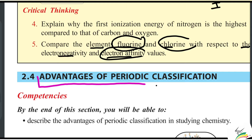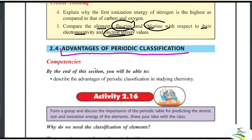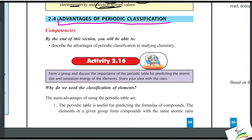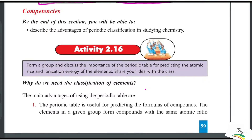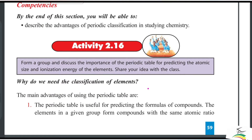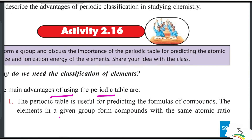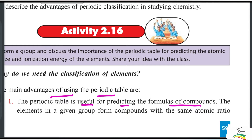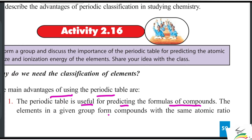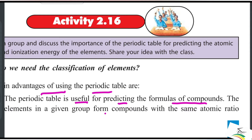Advantages of predicting with the periodic table. The main advantage of using the periodic table is that it is useful for predicting the formulas of compounds. We know that we can predict compound formulas using the periodic table, as it is useful for determining the components of a formula.